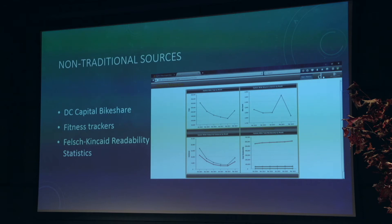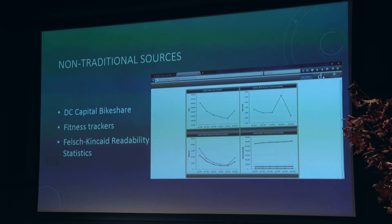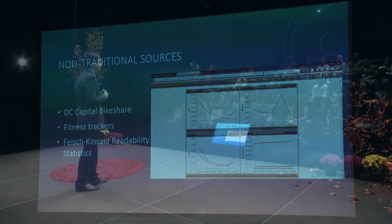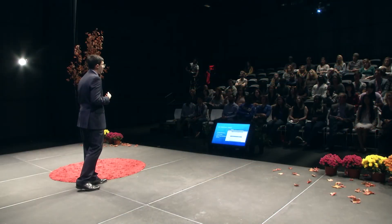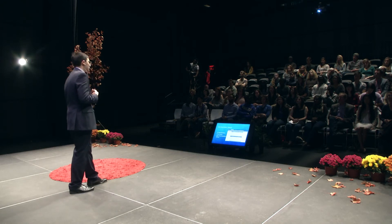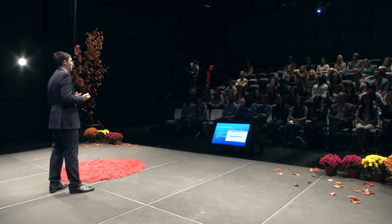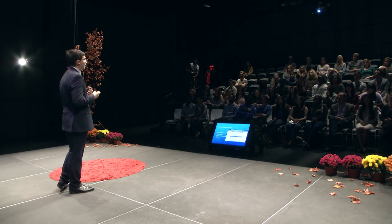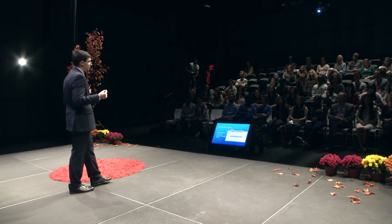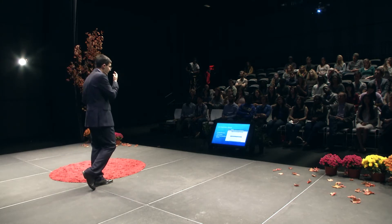So every time a bike is taken out and put back in, it's catalogued. This is particularly useful to somebody like me, who's trying to figure out what time to leave the office to get the nearest bike at the nearest dock instead of having to walk five extra blocks. But it can be very useful for other purposes as well — to determine transportation flows, to figure out how best to avoid the metro, and a variety of other things.